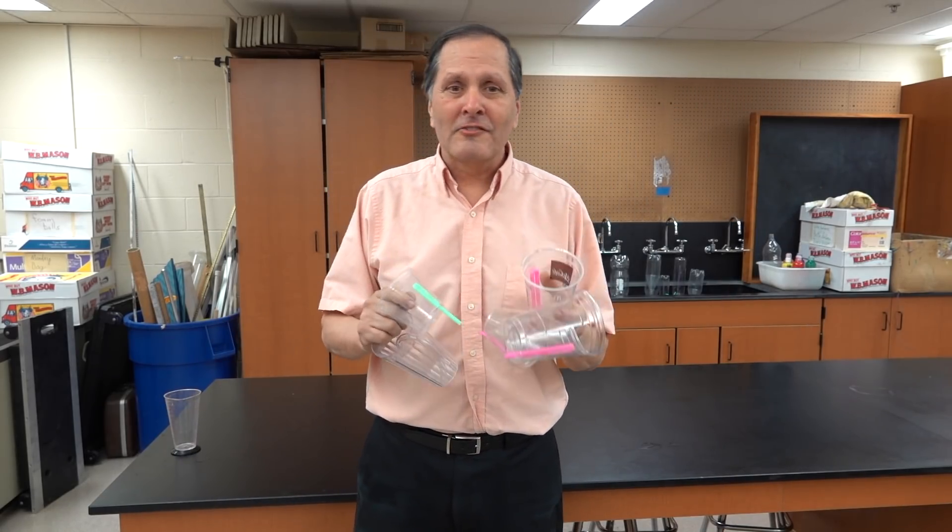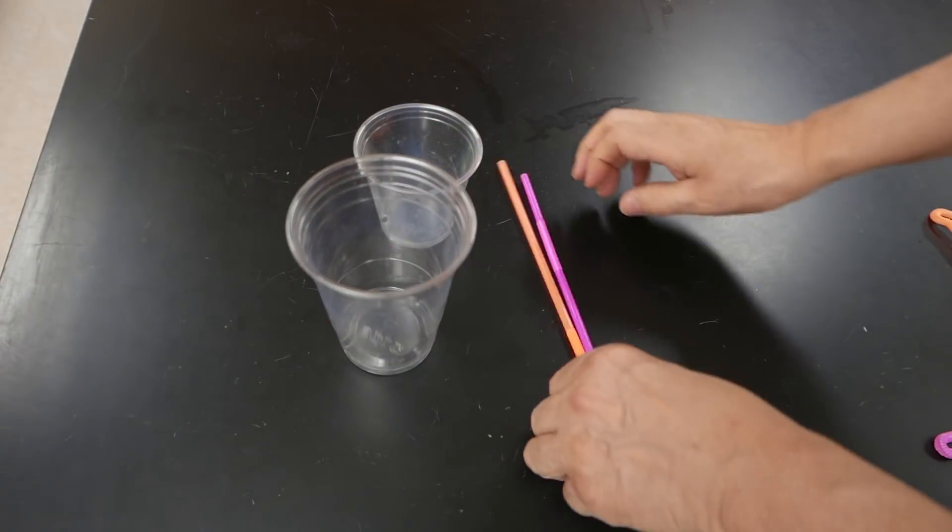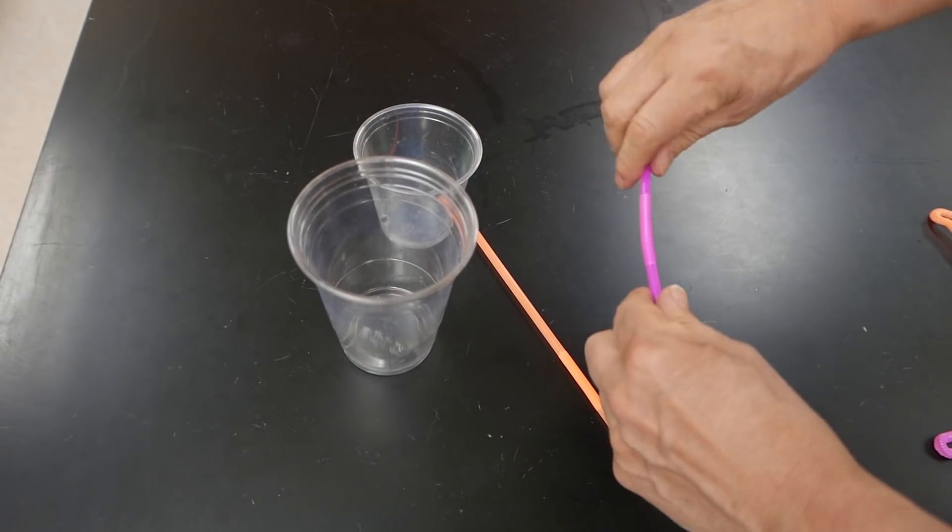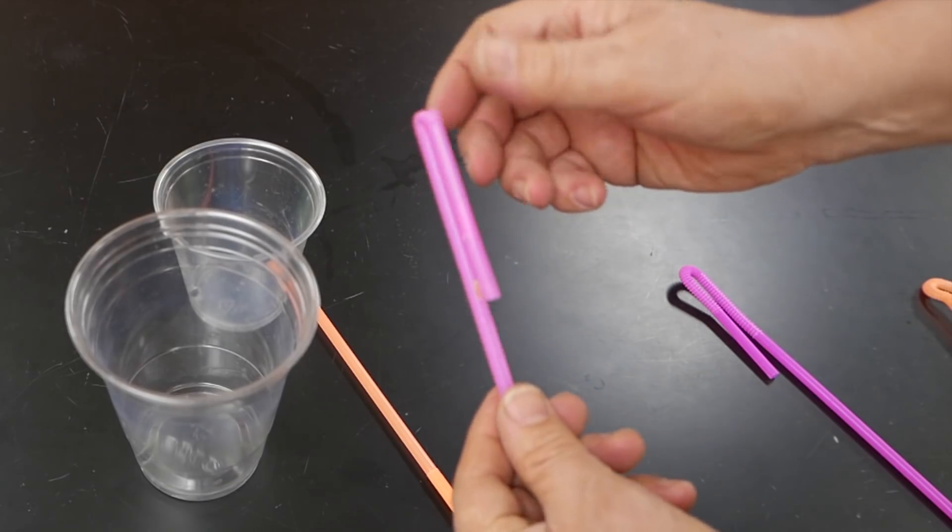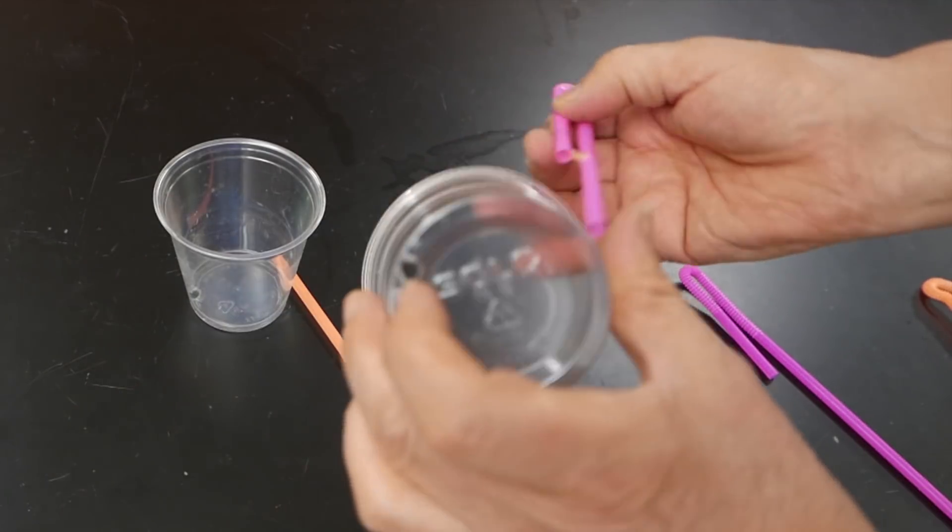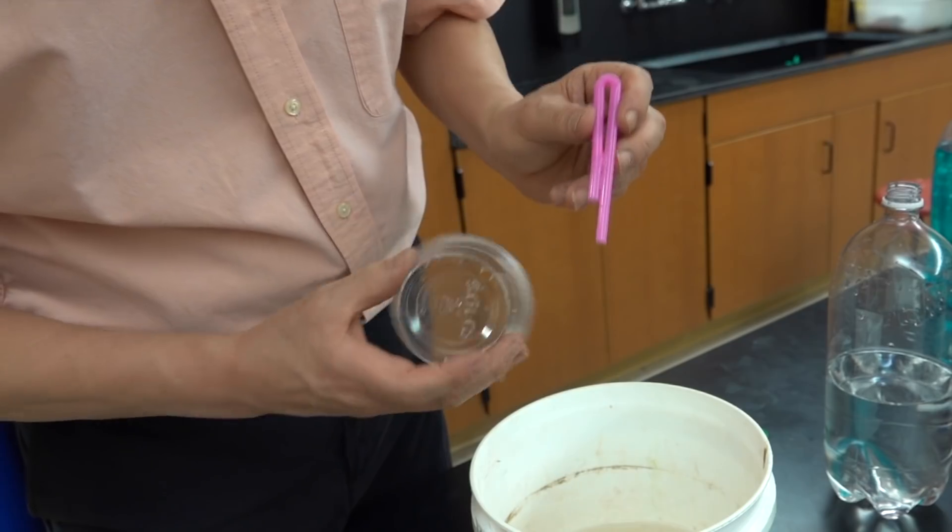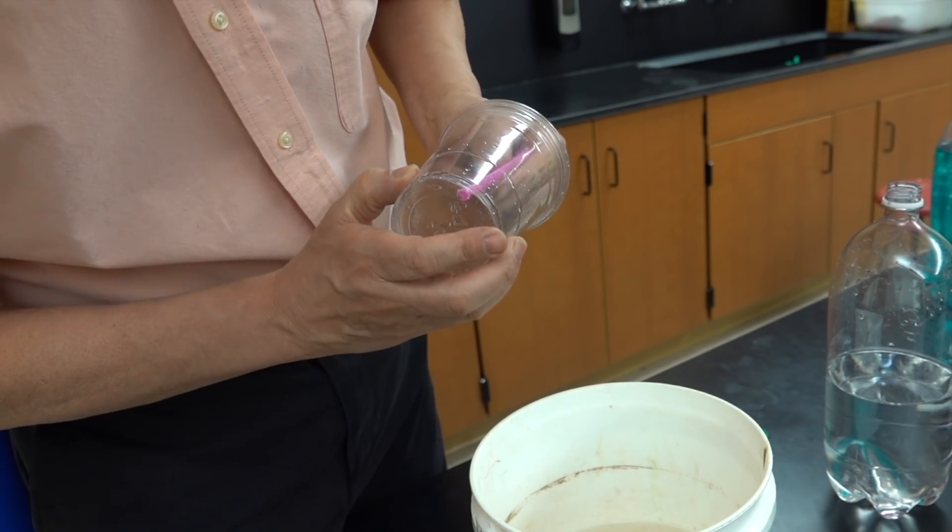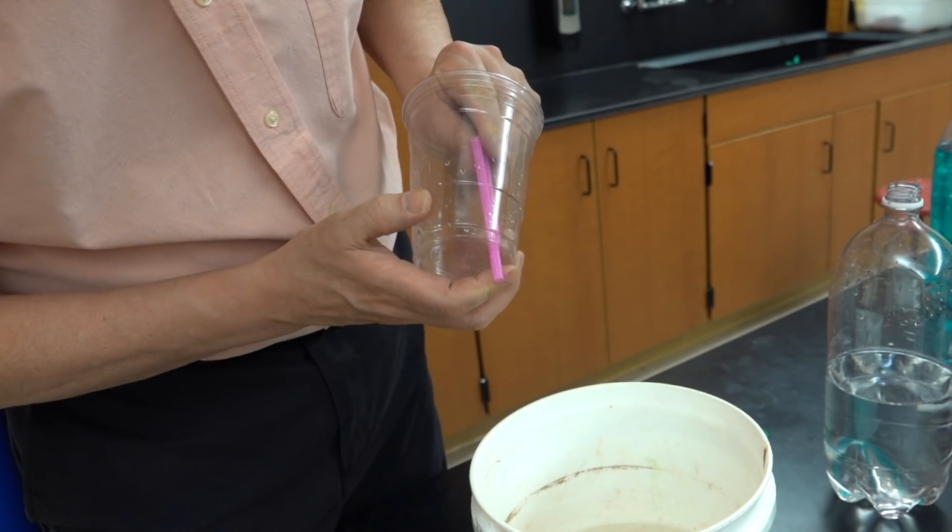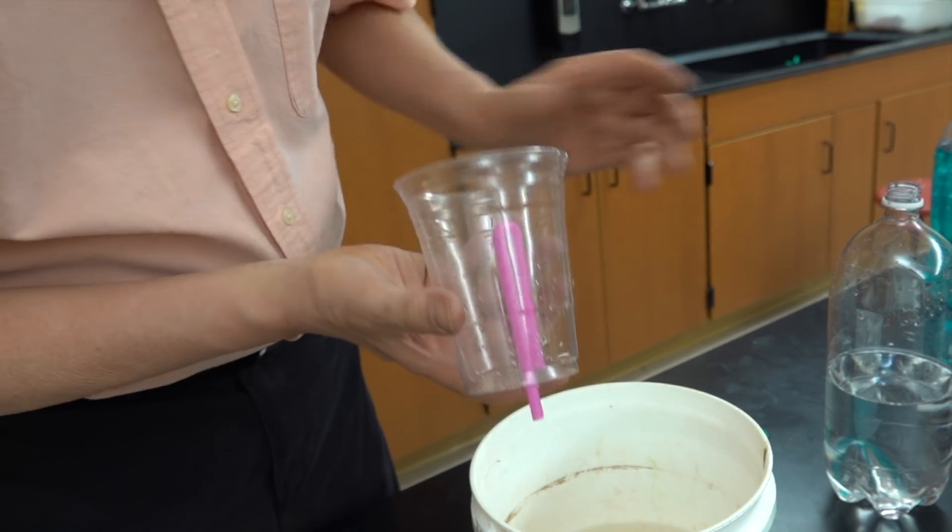Now you can make your own Tantalus cup with some simple materials. You'll need a plastic cup and a bendy straw. Stretch the straw out. I'll use some hot glue to hold it in place. Here's a hole in the bottom of the cup and I'm simply going to push this straw through that hole. Just a short distance through is fine.